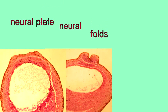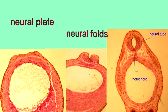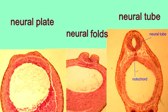These images are of the development of the frog nervous system. Here you can see the neural plate, the neural folds, and the neural tube.